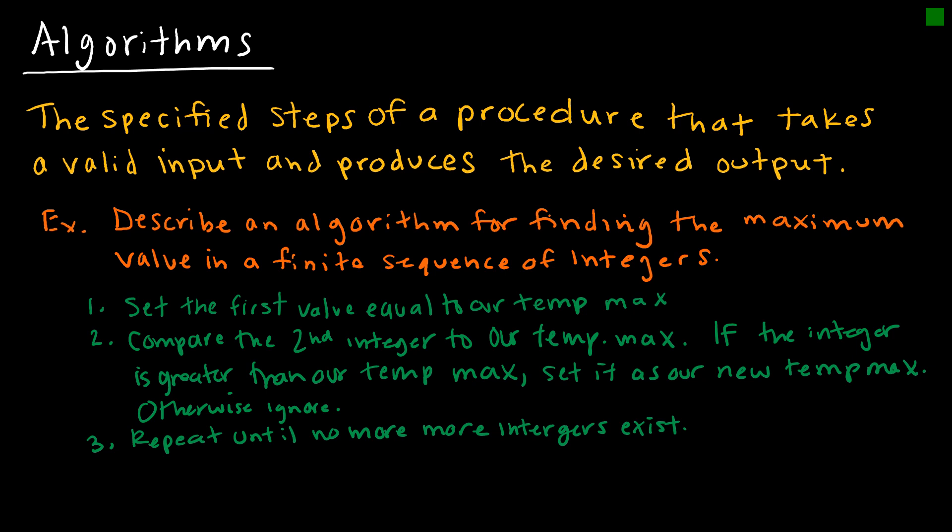Now you might be thinking, well, this seems very involved. I'm just going to look at the list and determine which one's the biggest. But remember, an algorithm gives us specific steps to follow. And it really has a lot to do with computer programming. Computers aren't just going to look at a list and say this one's the biggest. Computers look at algorithms which can handle much larger groups of data than we can.